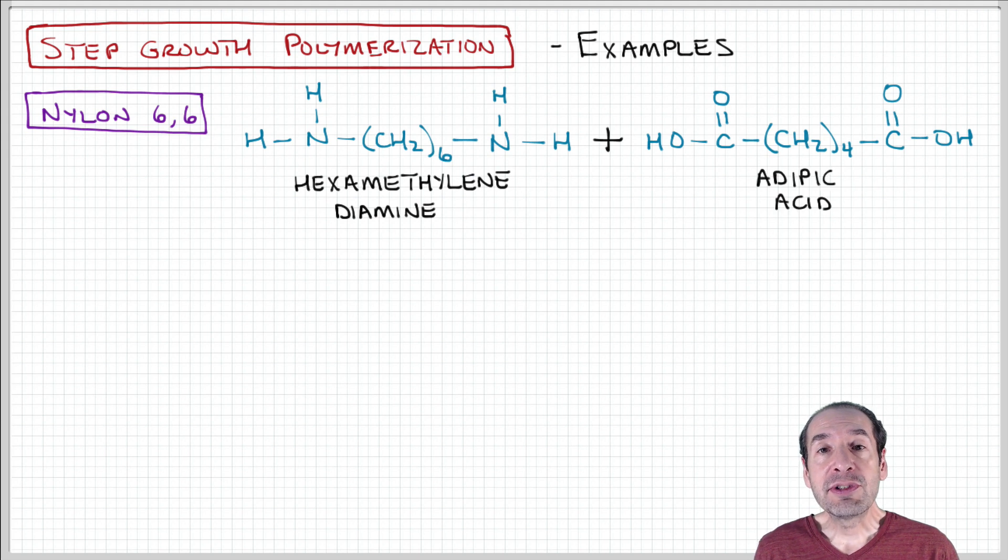One class of materials produced using step growth polymerization are so-called nylons. Remember nylon is a trade name. This is one example where you have two monomer units. One of them is an amine, hexamethylenediamine, and one of them is an acid, adipic acid.